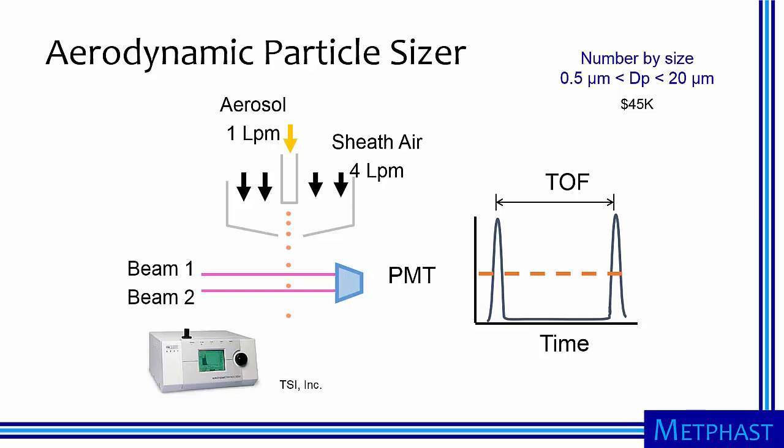The time that it takes to traverse the two beams is called the time of flight. Small particles, roughly less than 500 nanometers, accelerate rapidly to the same speed as the air in the nozzle. The inertial properties of larger particles causes them to increasingly deviate from the air flow velocity and have longer and longer times of flight. In this way, particles can be counted and sized at the same time.